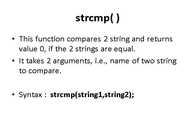The strcmp() function takes two strings as arguments and compares them. It returns 0 if both strings are equal. The syntax is strcmp(string1, string2). If they are the same, it returns 0.